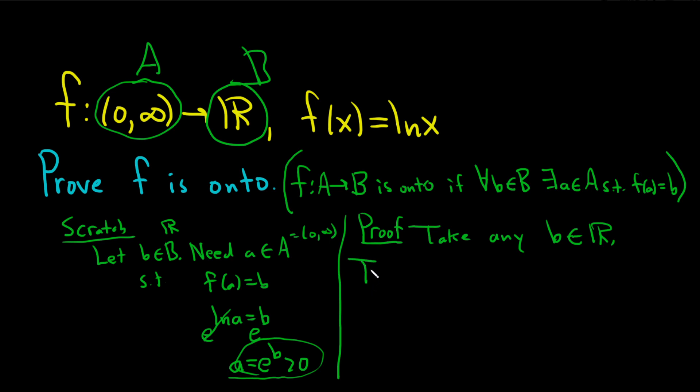Then the element A equals e to the b is a positive number, so it's in the set from 0 to infinity. And so we've done this part here. That's this part here.